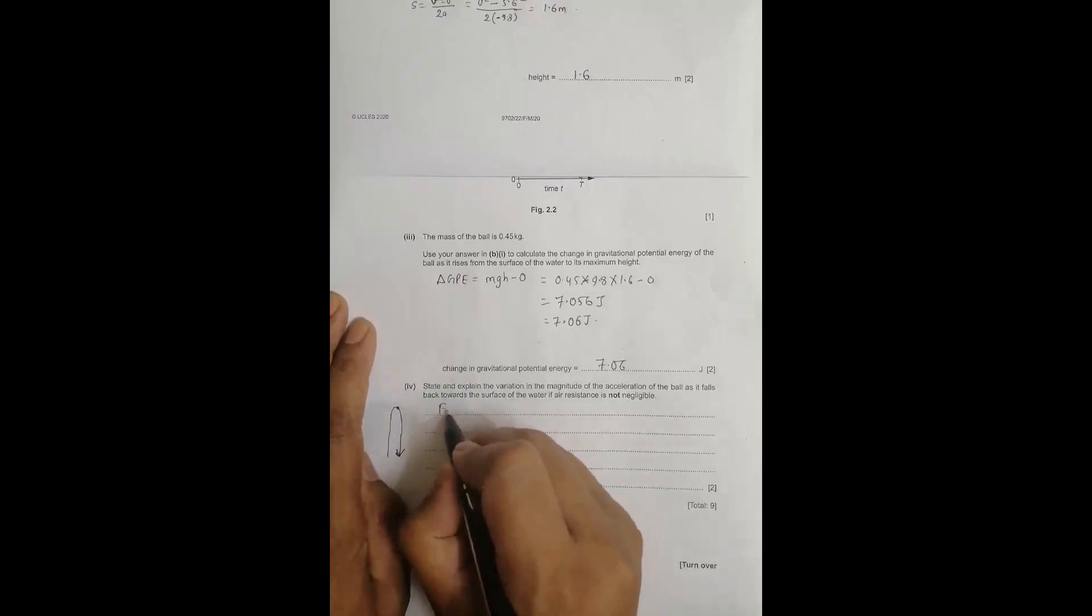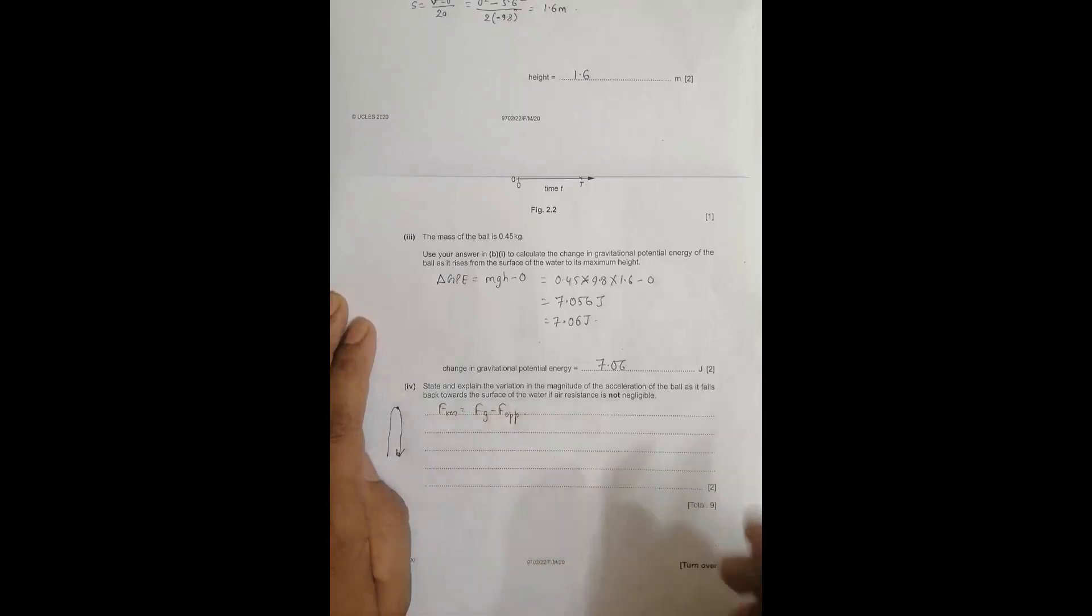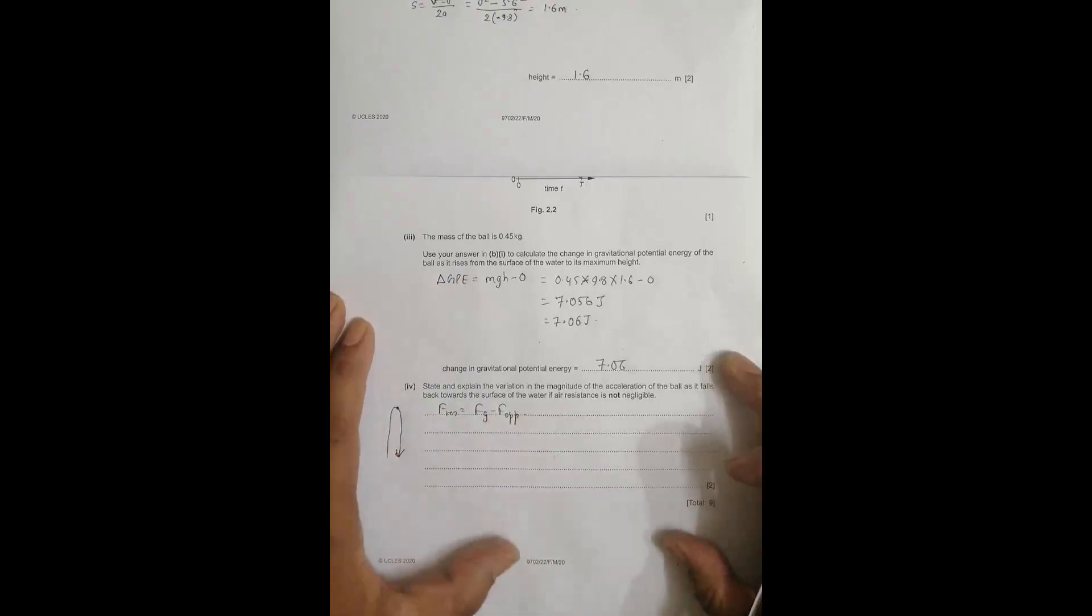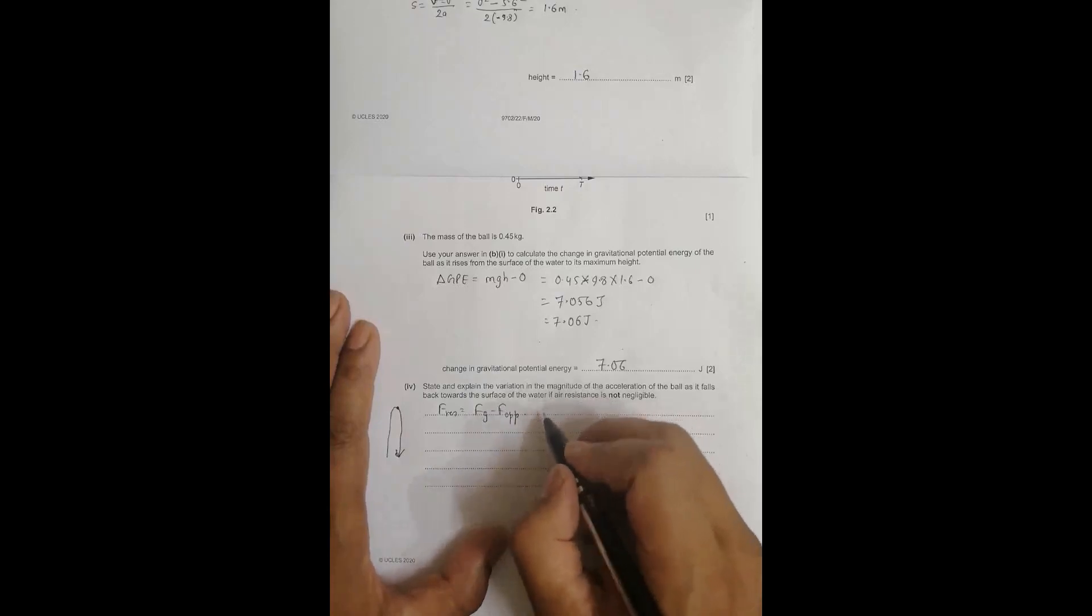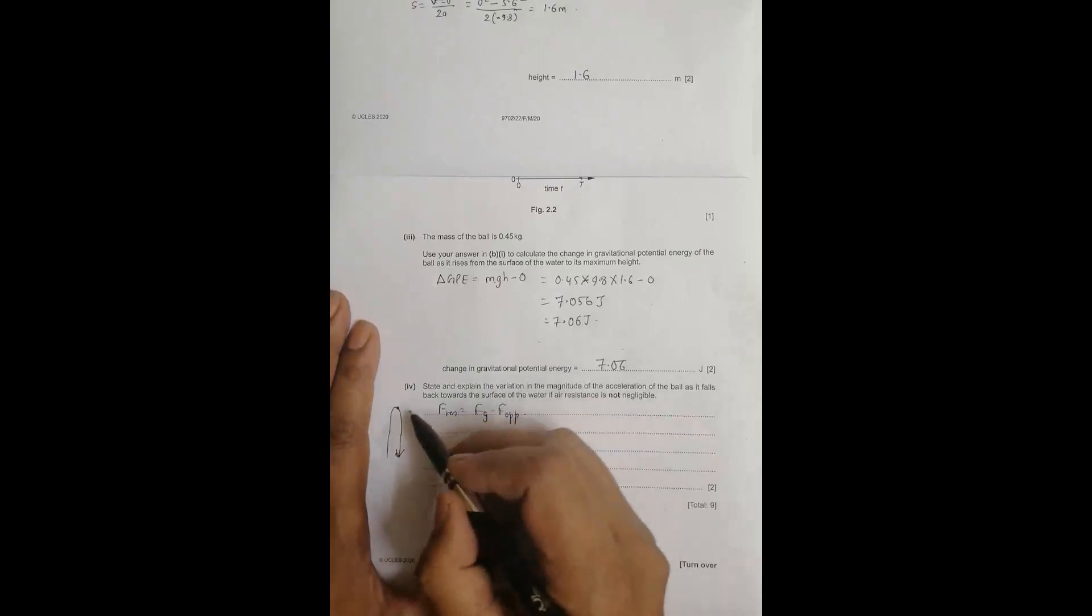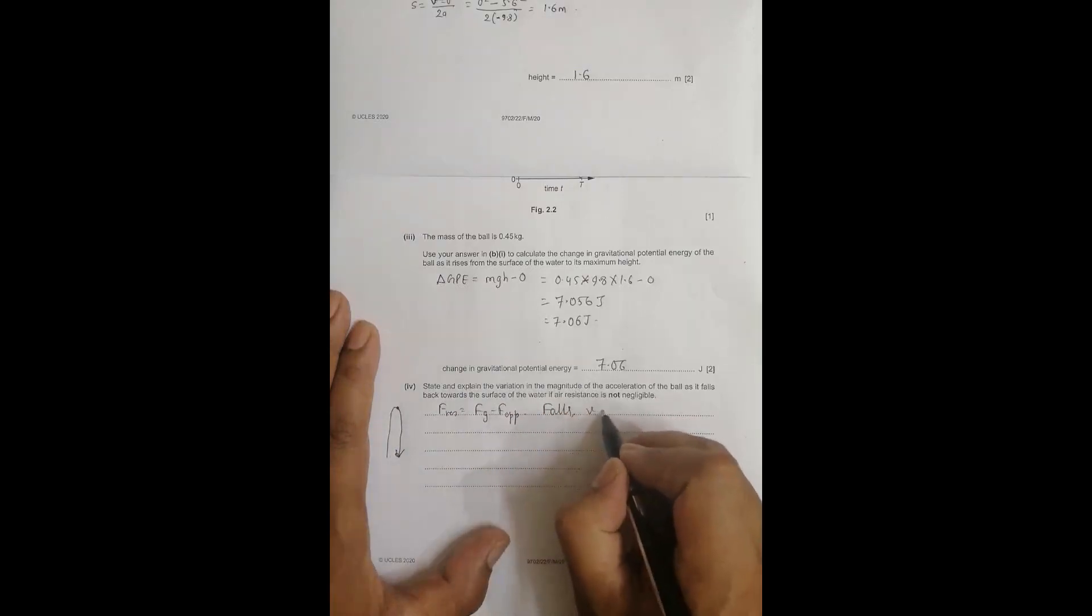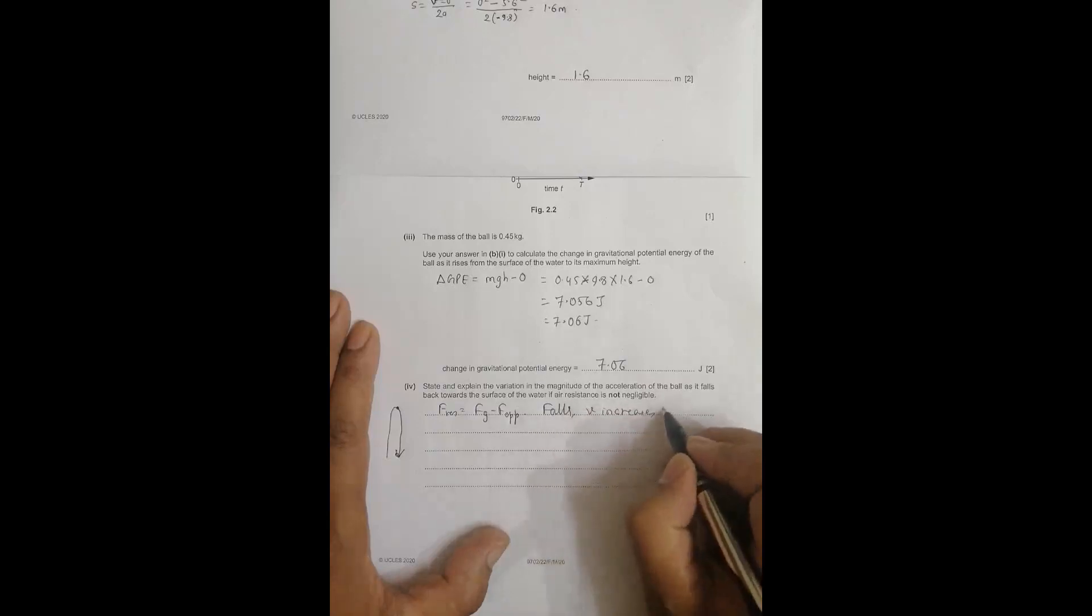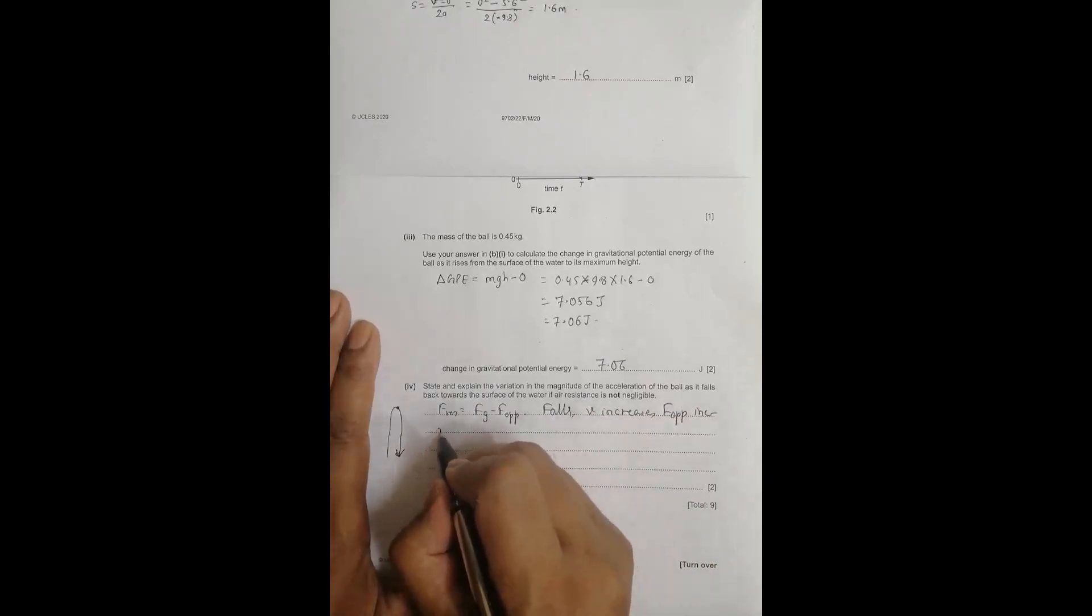The resultant force equals force of gravity minus opposing force when air resistance is significant. As the ball falls down, V increases. An increase in V means that F opposition also increases.